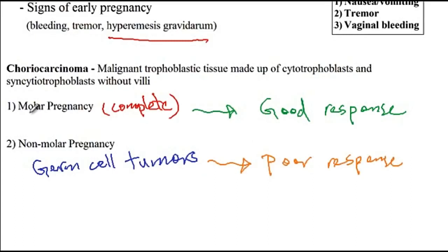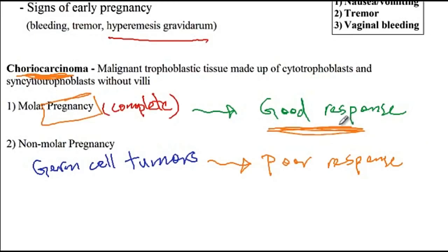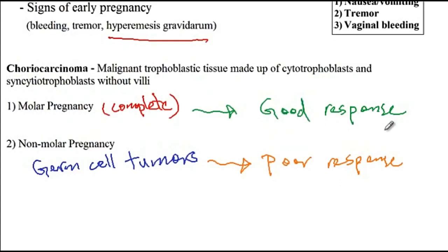A helpful way to memorize this: during pregnancy, the fetus is sensitive to everything — radiation, chemotherapy — so we have to be really careful. Therefore, since this type of choriocarcinoma arises from molar pregnancy, it is also highly sensitive to chemotherapy, resulting in a good response. In contrast, choriocarcinoma arising from germ cell tumors has a poor response to chemotherapy. That concludes our discussion of molar pregnancy.